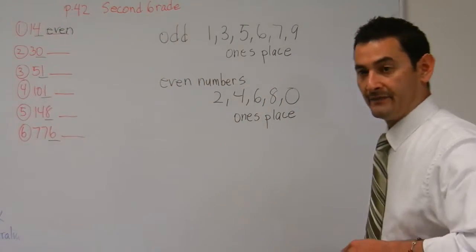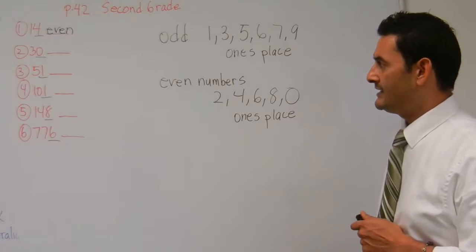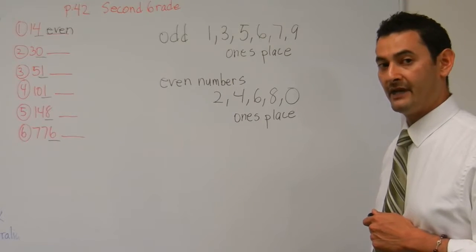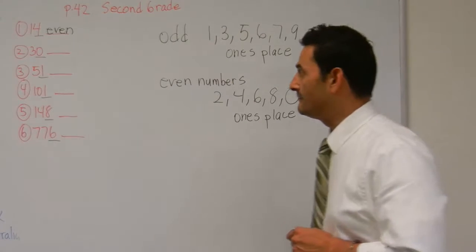The number 30. We have a 0 in the ones place. Is that an odd number or an even number, boys and girls? It's an even number. That is correct.